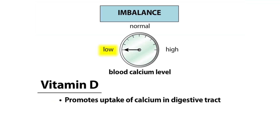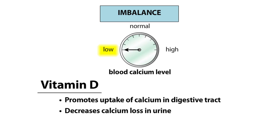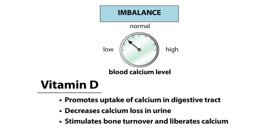In the kidneys, vitamin D acts with PTH to reduce calcium loss in the urine. The actions of vitamin D in bone are more complex. In the short term, vitamin D directly promotes bone turnover, liberating calcium into the blood. In the long term, however, elevated calcium levels promote the deposition of new bone and the removal of calcium from the blood.